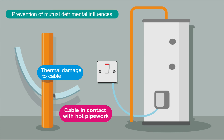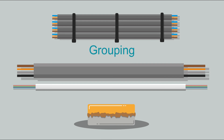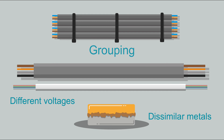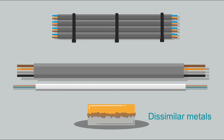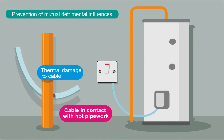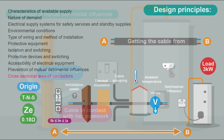We think about prevention of mutual detrimental influences — making sure cables are installed to avoid harmful influences from grouping, electrical versus non-electrical services, mains cables in contact with extra-low-voltage cables, cables carrying different voltages, cabling causing interference, and dissimilar metals causing corrosion. We mentioned earlier that the cable could come into contact with hot pipework, which would be detrimental — the insulation could melt, bare conductors might touch copper pipework, introducing a voltage throughout the house, or causing a short that could blow a hole in the copper pipe.